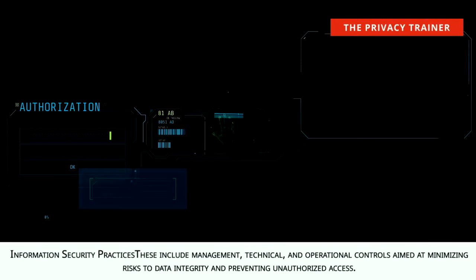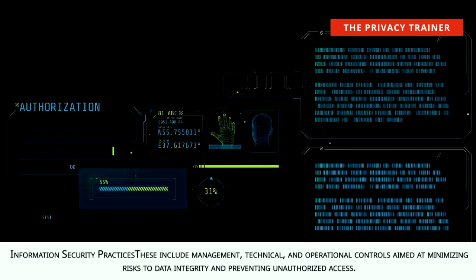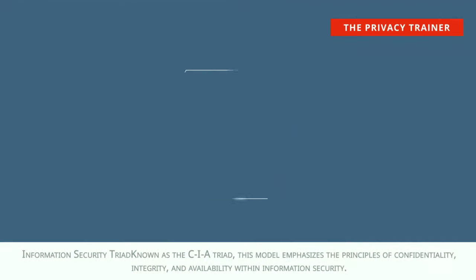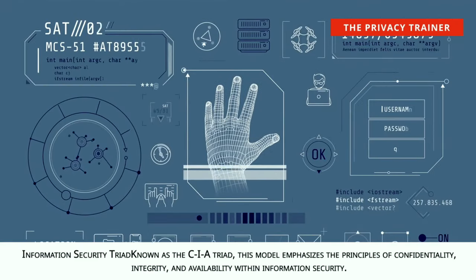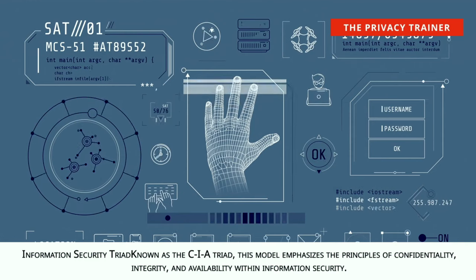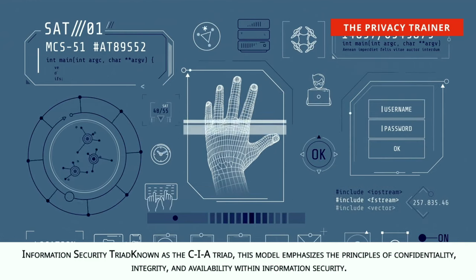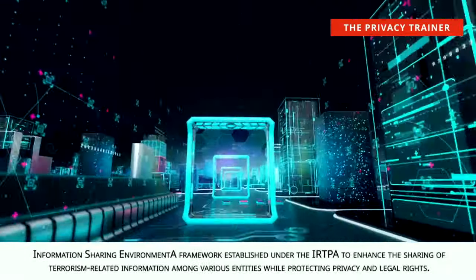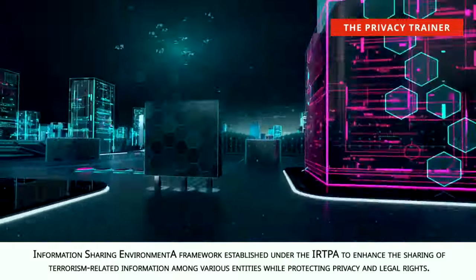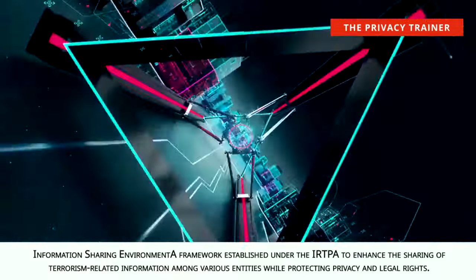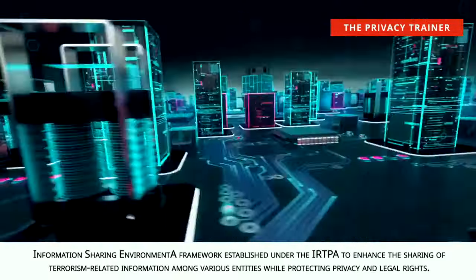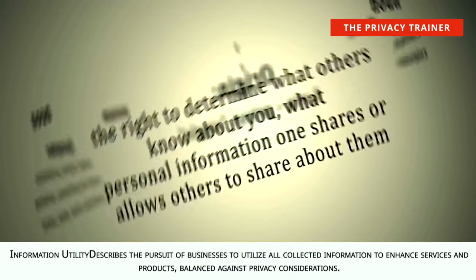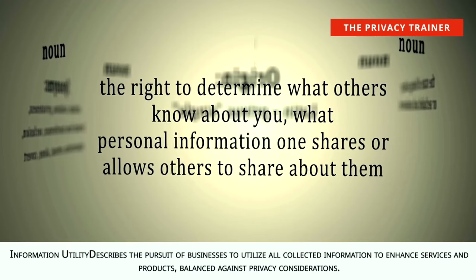Information security practices. Include management, technical, and operational controls aimed at minimizing risks to data integrity and preventing unauthorized access. Information security triad, known as the CIA triad. This model emphasizes the principles of confidentiality, integrity, and availability within information security. Information sharing environment. A framework established under the IRTPA to enhance the sharing of terrorism-related information among various entities while protecting privacy and legal rights. Information utility. Describes the pursuit of businesses to utilize all collected information to enhance services and products, balanced against privacy considerations.